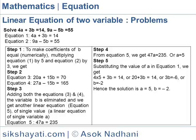Solve: 4a plus 3b is equal to 14, and 9a minus 5b is equal to 55. We label these as equation one: 4a plus 3b equals 14, and equation two: 9a minus 5b equals 55.